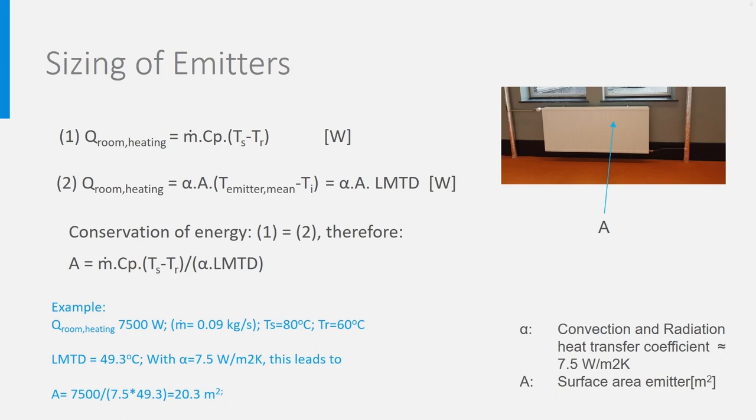This seems big, but the power of 7.5 kW corresponds to a large room of about 125 square meters. In such a large room, one could place 8 radiators of 2.5 meters by 1, for example. As we will see in the next slide, there are also lots of ways to increase the effective surface area of the radiator without increasing its size too much.